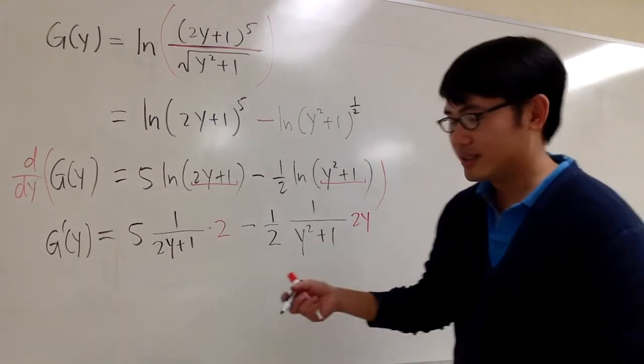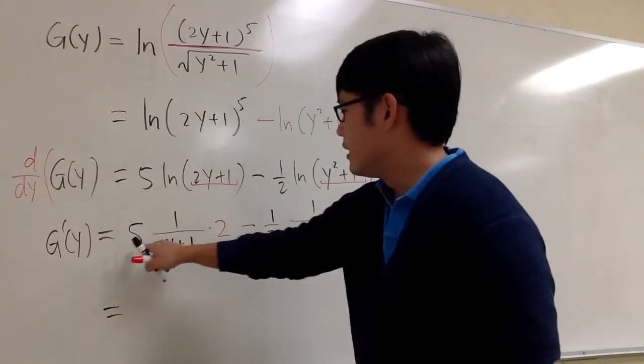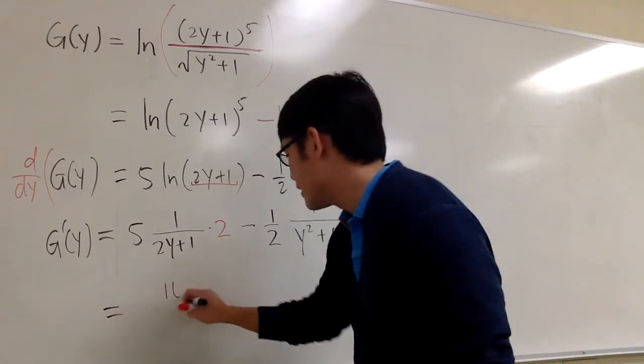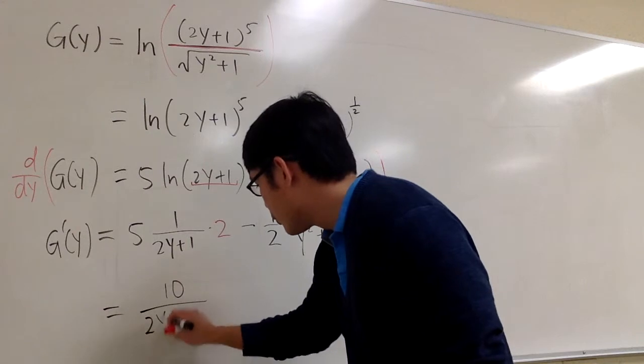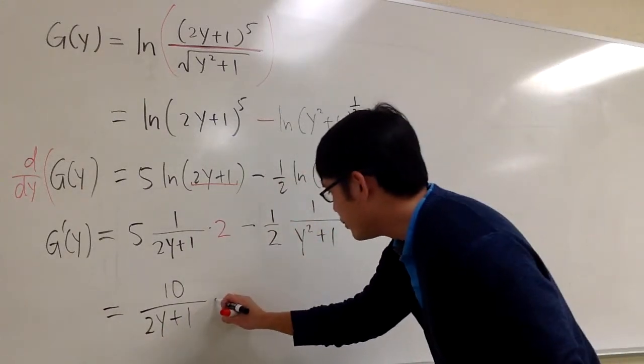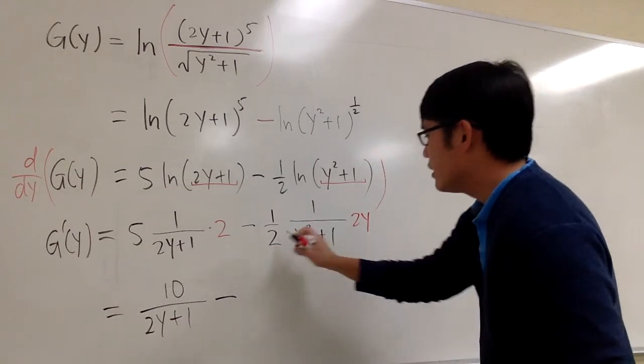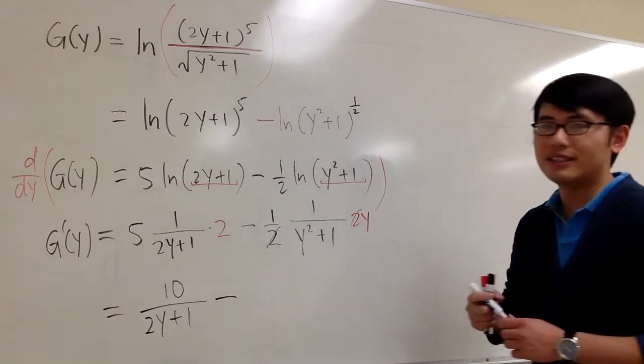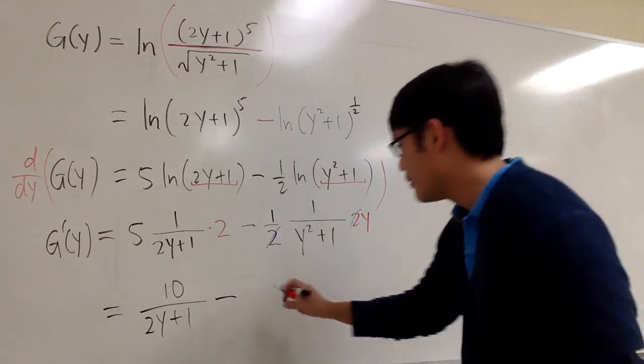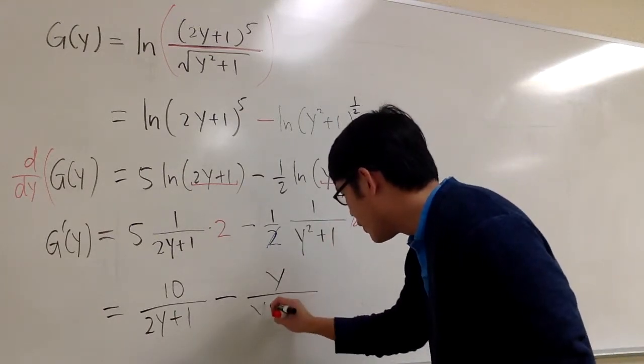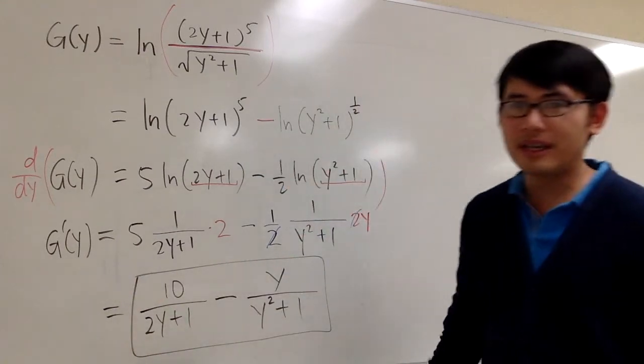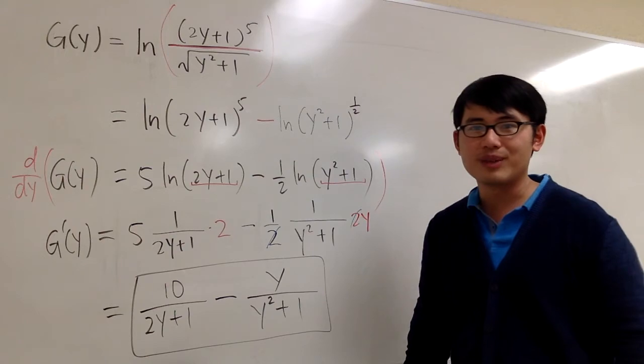And then the rest is just putting the things together. 5 times 2 is equal to 10 over 2y plus 1. And we'll continue with minus. This 2 and that 2 cancel each other out. I can put the y on the top as well. y over y squared plus 1. And I think this is the most that we can do. And this is the answer in the back of the book as well.